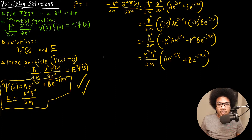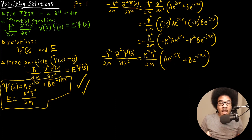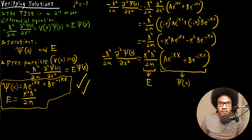Looking at this result, we've applied the operator and now ask ourselves: are these solutions valid solutions to Schrödinger's equation? The answer is yes. We've gotten the wave function back — this is our original ψ(x) — and everything out front is a constant: k, m, and h-bar (Planck's constant). So this is the energy, and that's exactly the energy value we were looking for, obtained by applying the operator to the wave function.